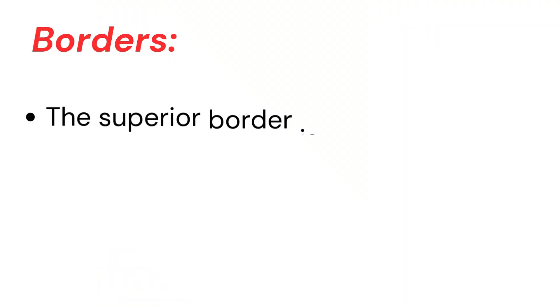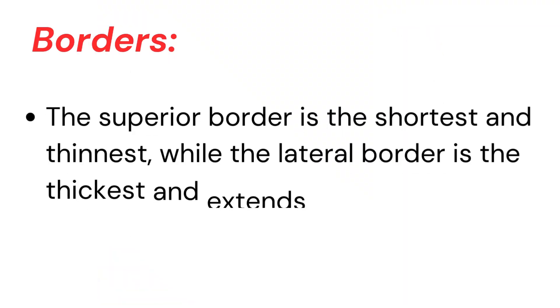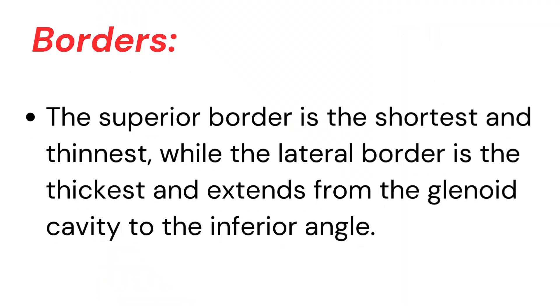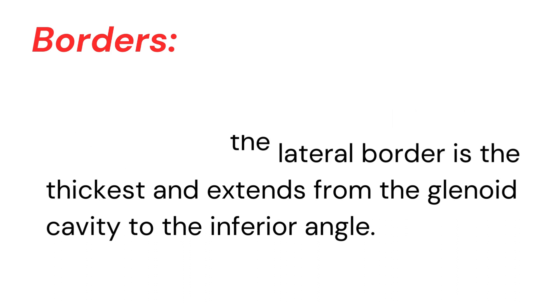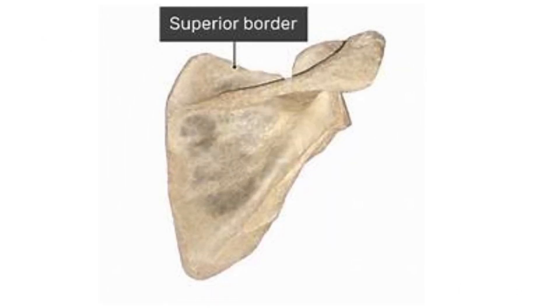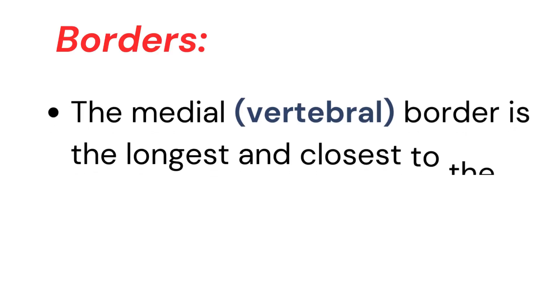Borders. The superior border is the shortest and thinnest, while the lateral border is the thickest and extends from the glenoid cavity to the inferior angle. The medial or vertebral border is the longest and closest to the spine.